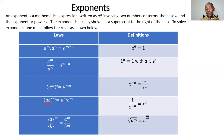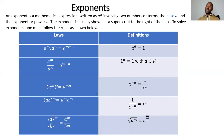The fourth law: 'ab to the power m' means 'a to the power m' times 'b to the power m' - the power applies to both a and b. There's also the rule for fractions: 'a over b, to the power m' means 'a to the power m over b to the power m'. It's important to know these rules so we can apply them effectively.